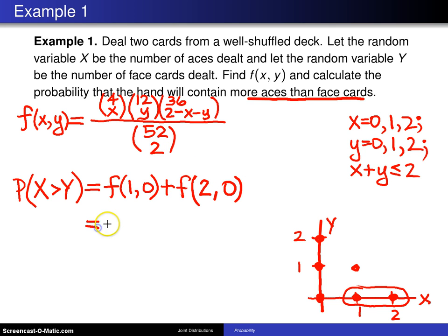When you plug into that formula and put it in lowest terms, this will be 25 divided by 221 as an exact fraction. And to four digits, this is approximately 0.1131. So the probability you will have more aces than face cards is a fairly rare event, happens about 11% of the time when you deal two cards from a well-shuffled deck.